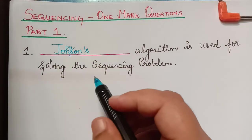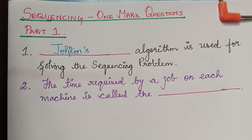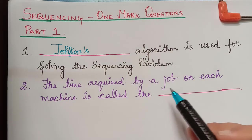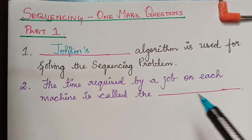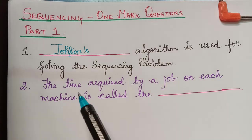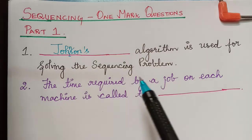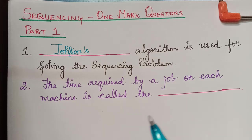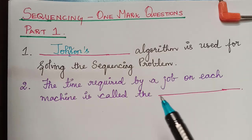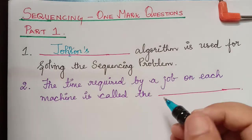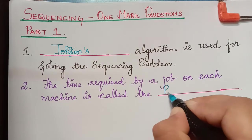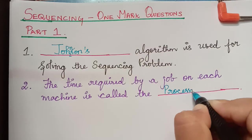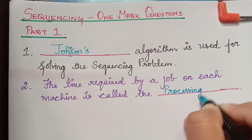The next question is: the time required by a job on each machine is called the dash. The time taken by a job on each machine is known as the processing time. So the answer is processing time.